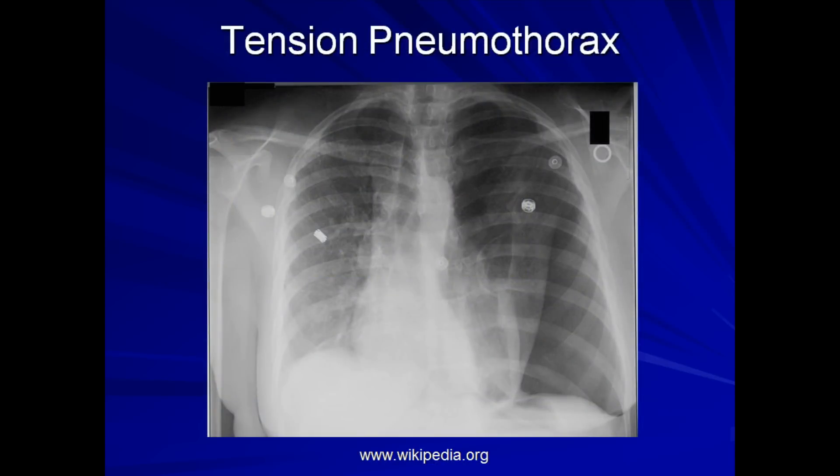Here is an example of a tension pneumothorax on plain x-ray. You can immediately note the hyperlucency and absence of lung markings on the left, along with a rightward shift of the cardiac silhouette, trachea, and other mediastinal structures. This patient was likely severely hypotensive.